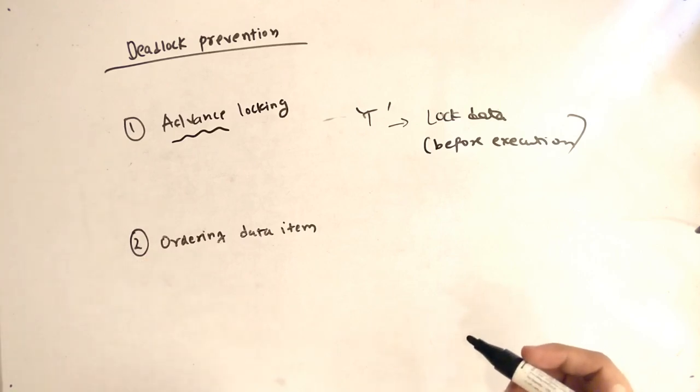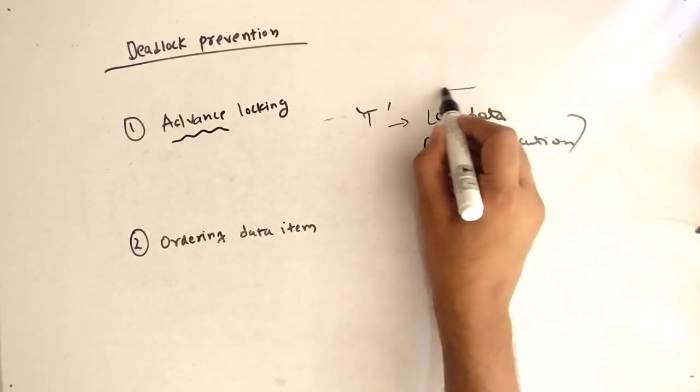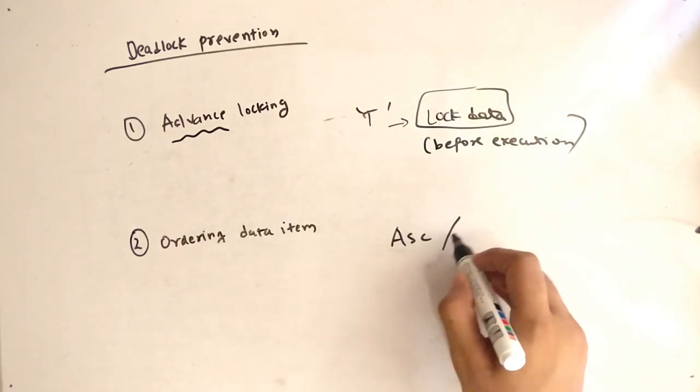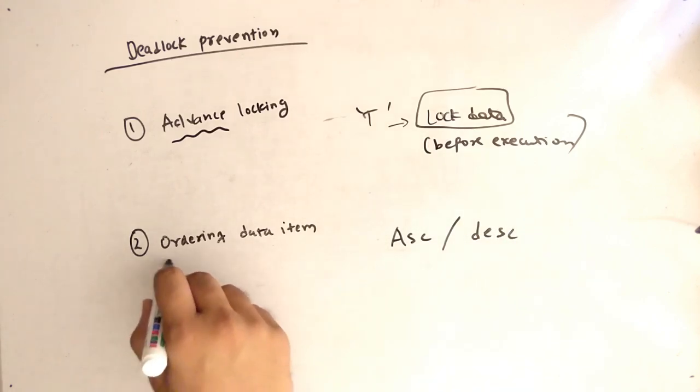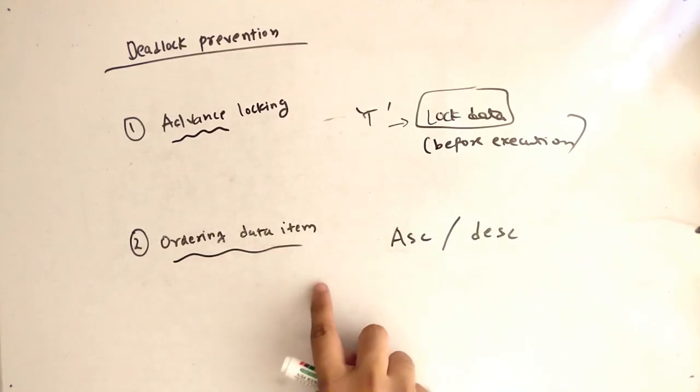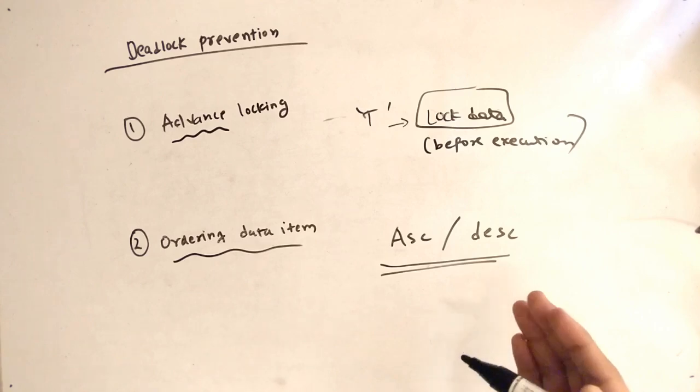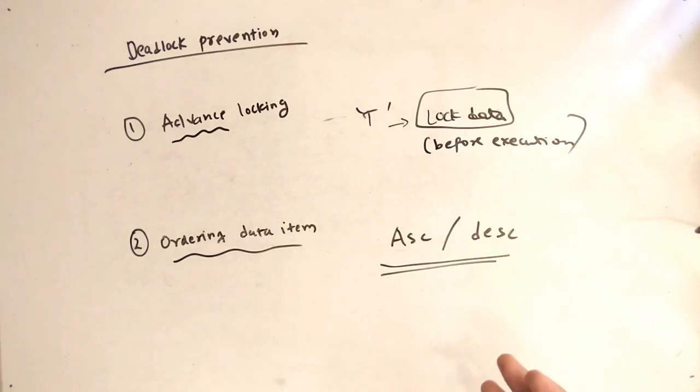So let's talk about the second point, that is ordering data item. Ordering data item means you are locking the data item in order. We can order that ascending or descending. The meaning is the same, like transaction locks the data item, but now it is in order, like ascending order or descending order. And it's also before the execution. So advance locking with ordering data item.